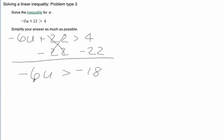Now, we're going to divide by negative 6 in order to get this u term all by itself. Like we usually do. However, in an inequality, there's an extra rule that you've got to pay attention to.